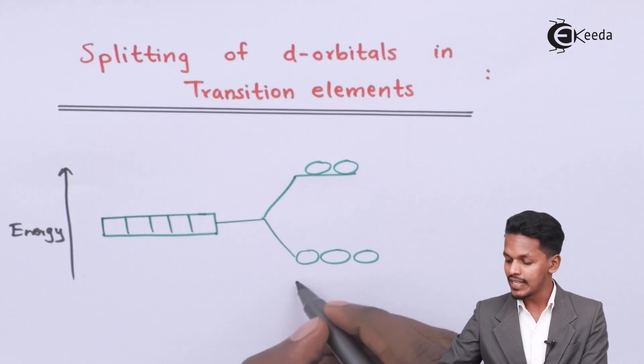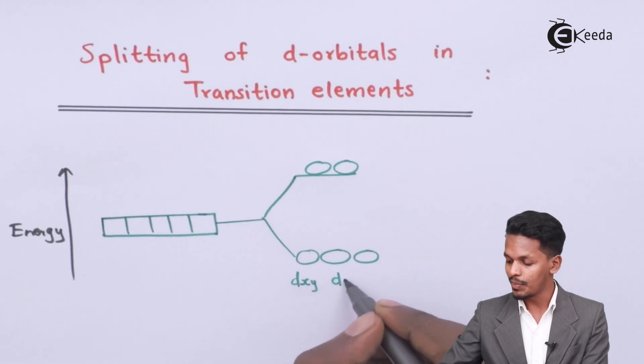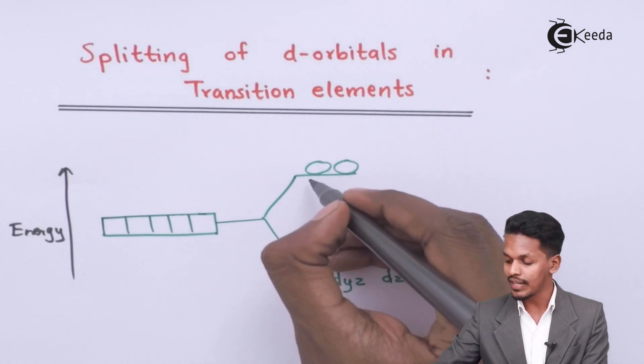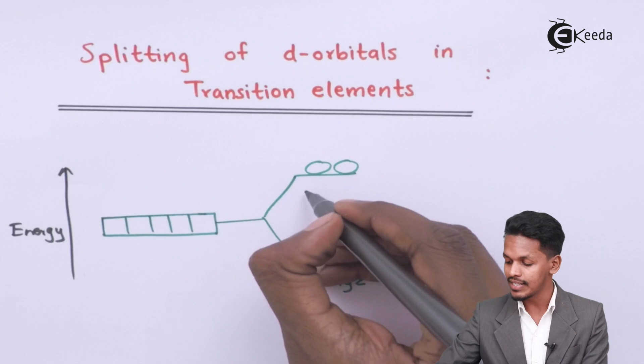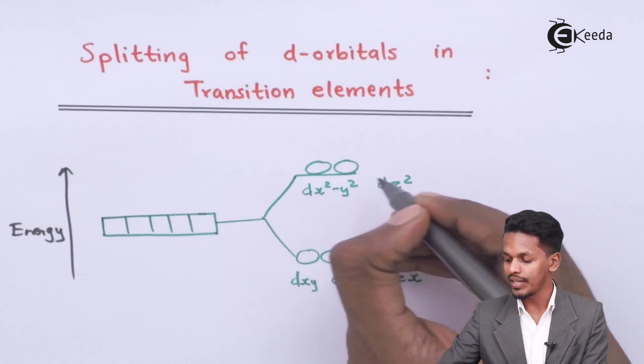The lower level contains dxy, dyz, and dzx orbitals. The rest of the 2 orbitals are split into the above level, and these are dx²-y² and dz².